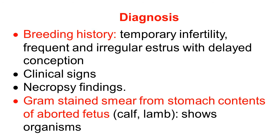Necropsy findings also support the diagnosis, as we have already seen in the previous presentation. A very important and confirmatory method is the gram stain smear prepared from the stomach content of the aborted fetus. The gram stain smear from the stomach content of the aborted calf or lamb fetus shows the characteristic Campylobacter organism.